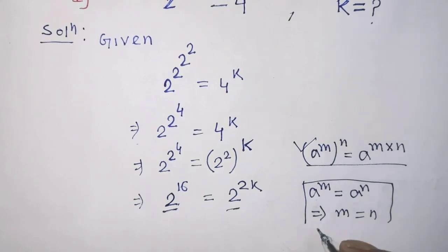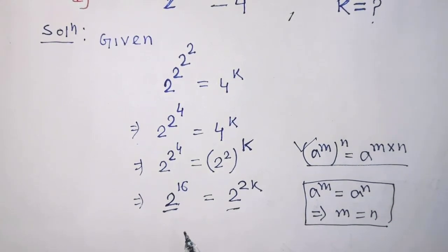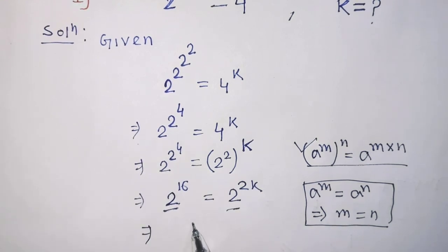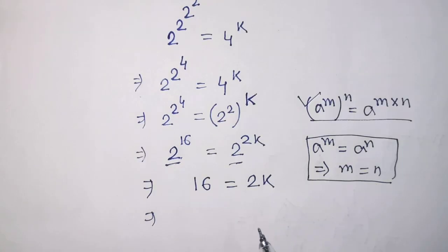According to this formula, we can cancel the base 2 from both sides of this equation. Then, it will be 16 is equal to 2 times k, then it will be 16 is equal to 2 times k.